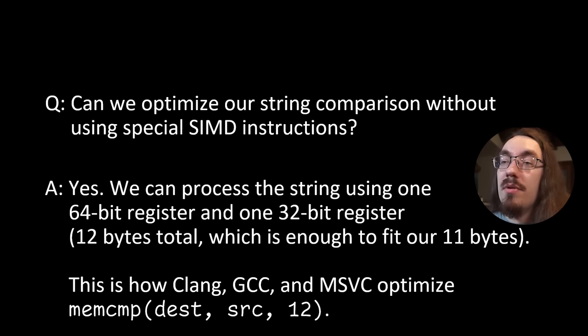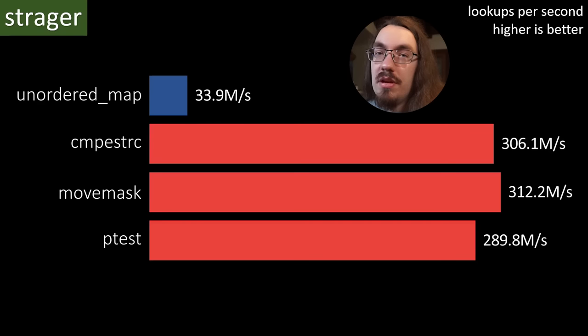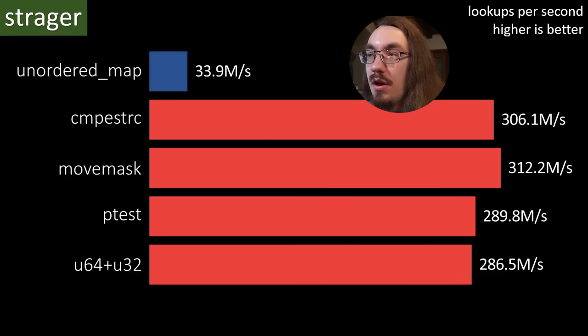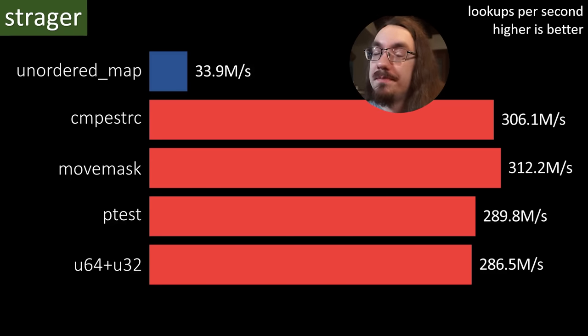Next question, can we optimize our string comparison without using special SIMD instructions? Well, the answer is yes. If what we do is do a memcomp with exactly 12, all compilers will generate a 64-bit load followed by a 12-bit load. And we could do the same technique and do some masking, so let's try it. Here's our fast branchless SIMD approaches. And without using special SIMD instructions, we almost got the same performance as our p-test approach. That's pretty good.